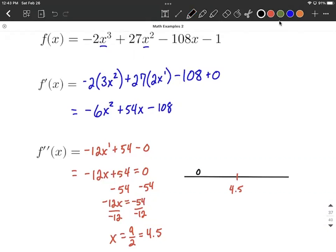So I'm going to pick zero as a nice value to the left, plug it into the second derivative, which will be negative 12 times zero, plus 54, which overall is going to be positive. So that tells us in this section, it's concave up until you get to 4.5.